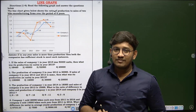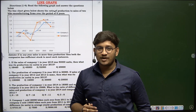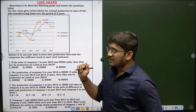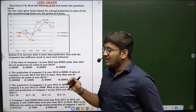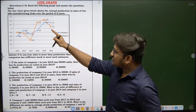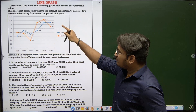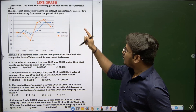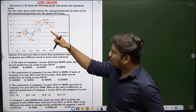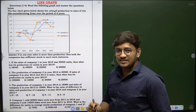Hi everyone, welcome back to the series of data interpretation part 2. Today we are going to discuss about line graphs. The line chart given below shows the ratio of production to sales of two bike manufacturing firms over the period of 6 years.